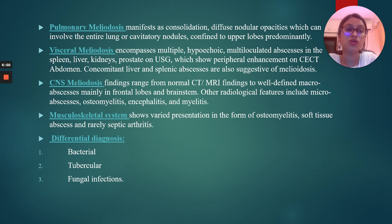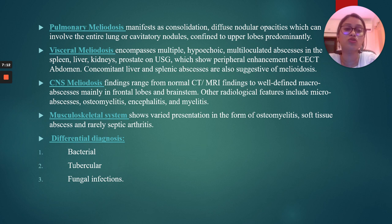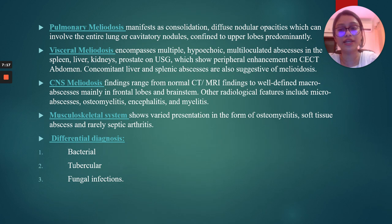Concomitant liver and splenic abscesses, or splenic abscesses alone, are also suggestive of meliodosis. CNS meliodosis ranges from normal CT or MRI findings to well-defined macro-abscesses in the frontal lobes and brainstem, and also includes micro-abscesses, osteomyelitis, encephalitis, and myelitis. The musculoskeletal system shows varied presentations in the form of osteomyelitis, soft tissue abscesses, and rarely septic arthritis. The differential diagnosis encompasses bacterial, tubercular, or fungal infections.